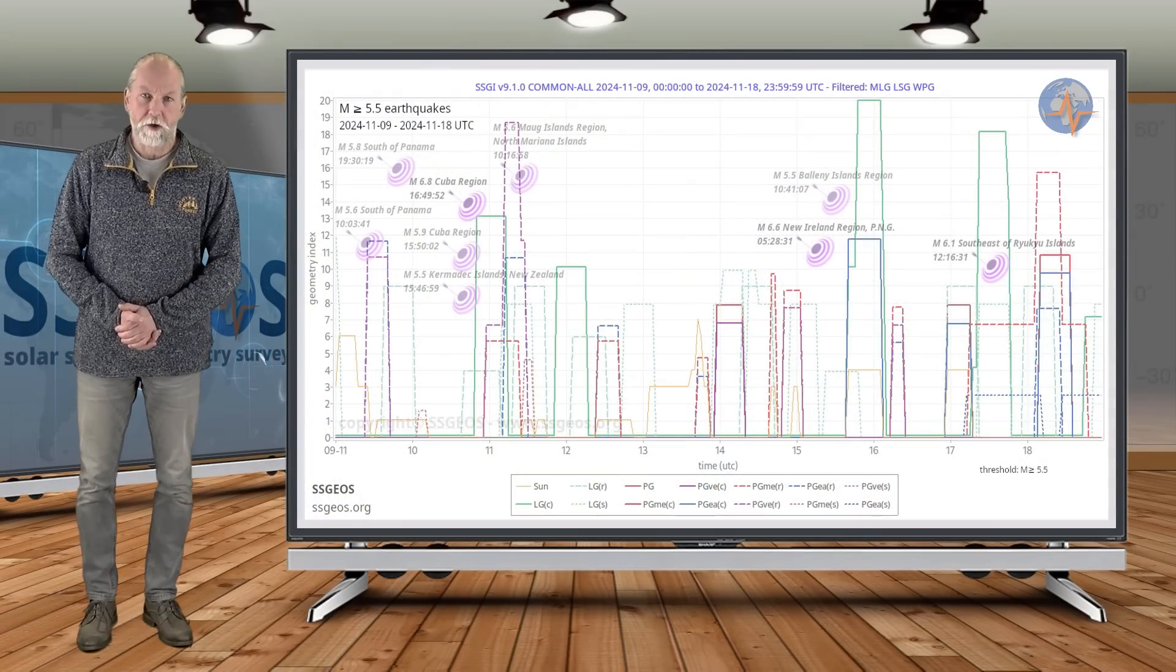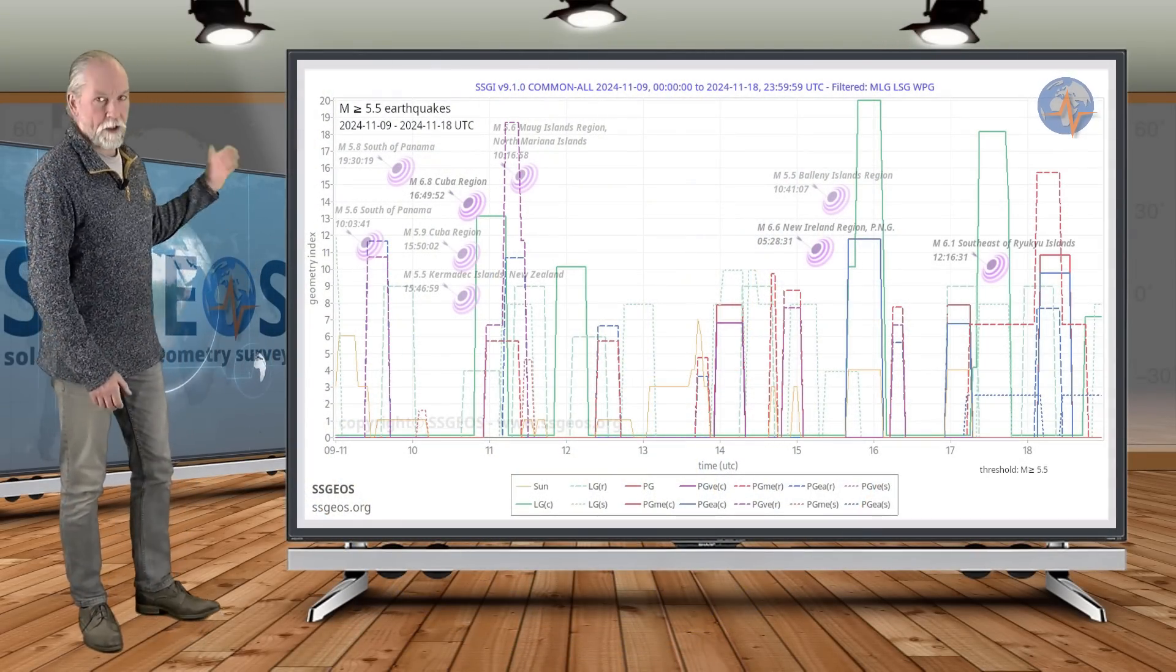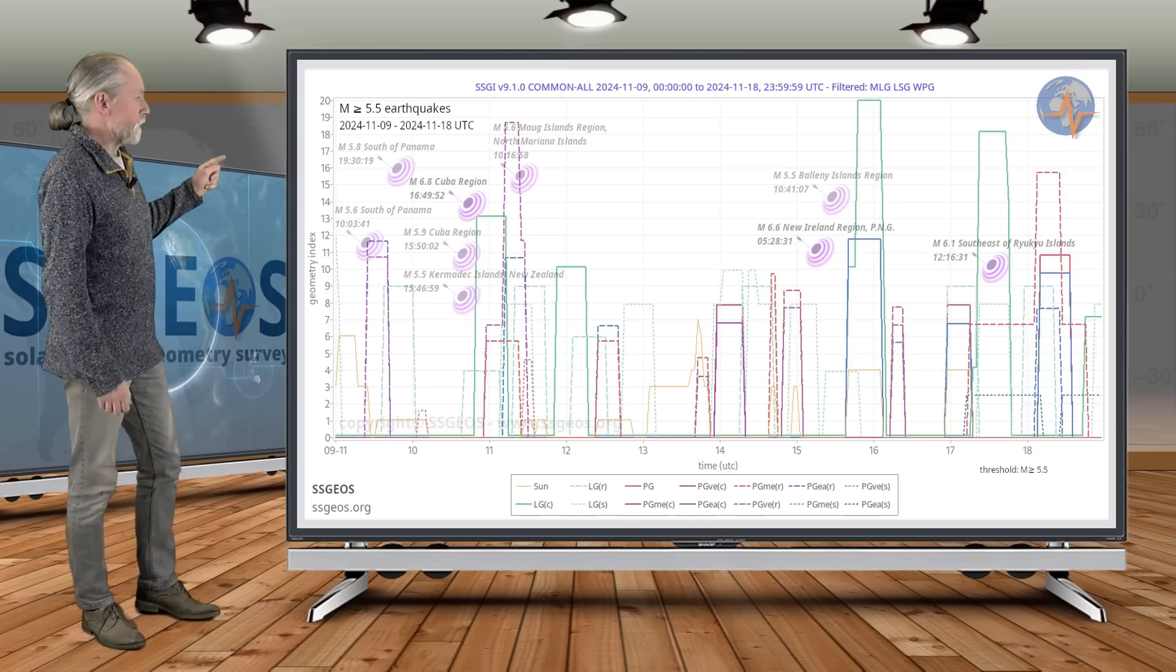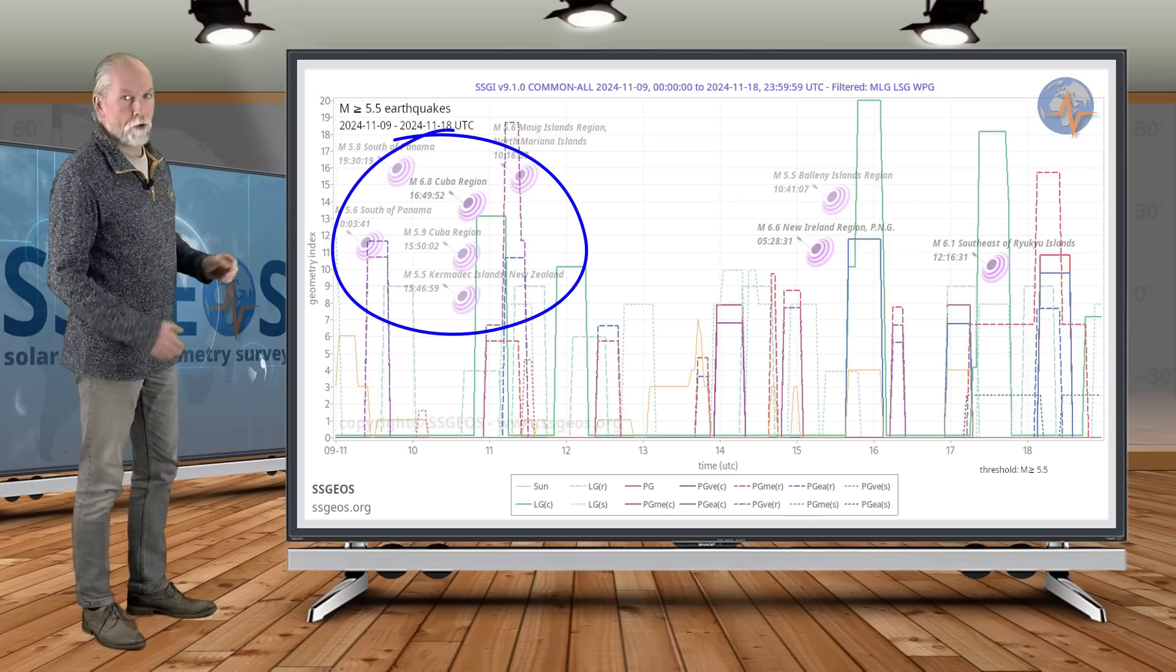Welcome to a new planetary and seismic update. We look at the previous time frame, the SDJI graph with earthquakes magnitude 5.5 and larger, and we see right at the beginning around the 10th an obvious cluster of stronger earthquakes.